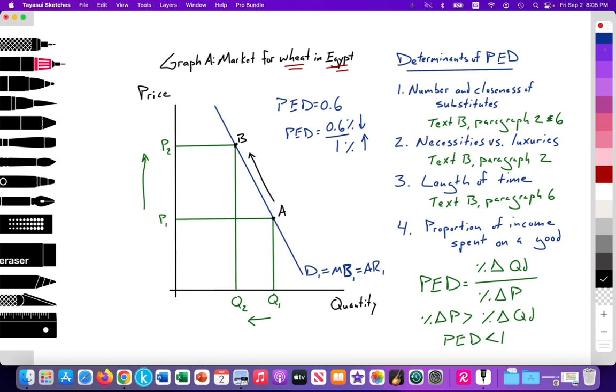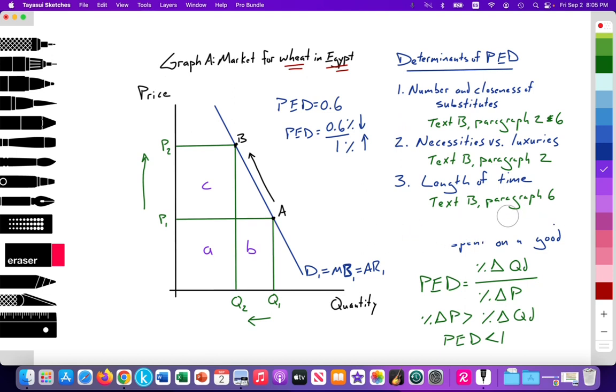It's a movement along. And to discuss total revenue, I'll label some areas that are A and B, and area C. So I've drawn the model, and I now need to analyze it in the context of Egypt.